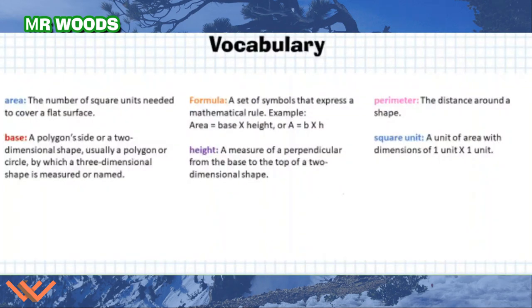Before we get started, you need to have a good understanding of the vocabulary I'll be using. Area is the number of square units needed to cover a flat surface. Notice I said square units — that unit could be just a unit, or it could be a measurement system such as the metric system, so it could be a meter, or the US system — it could be a foot or a mile. Base is a polygon side, or a two-dimensional shape, usually a polygon or circle, by which a three-dimensional shape is measured or named. Formula is a set of symbols that express a mathematical rule — for example, area is equal to base times height, or A equals B times H, or BH.